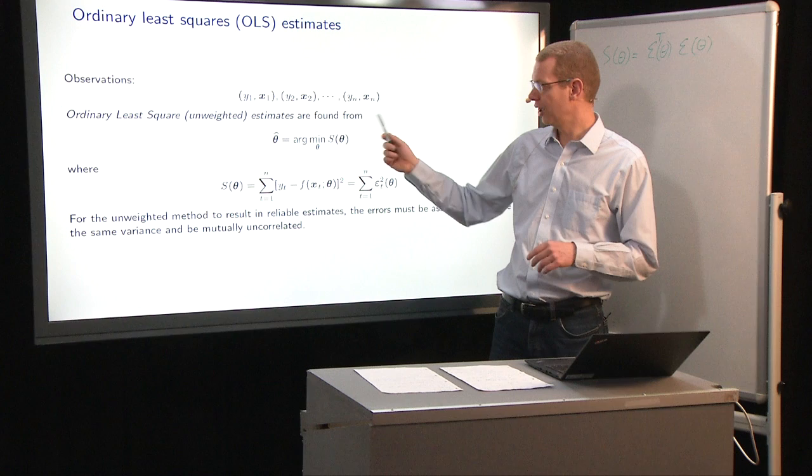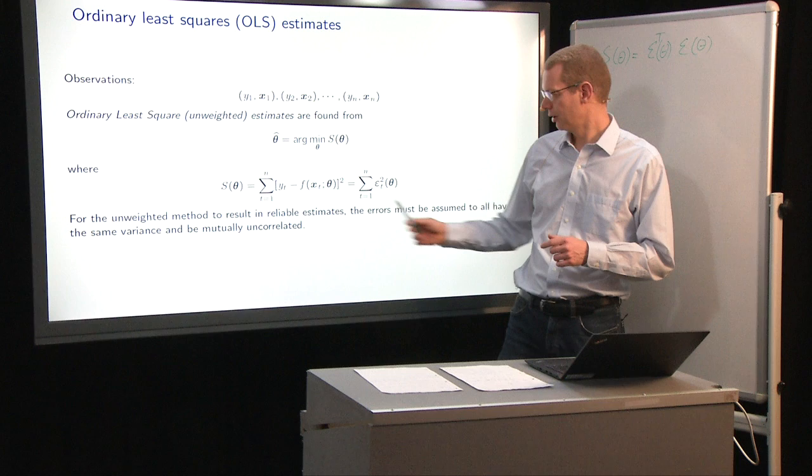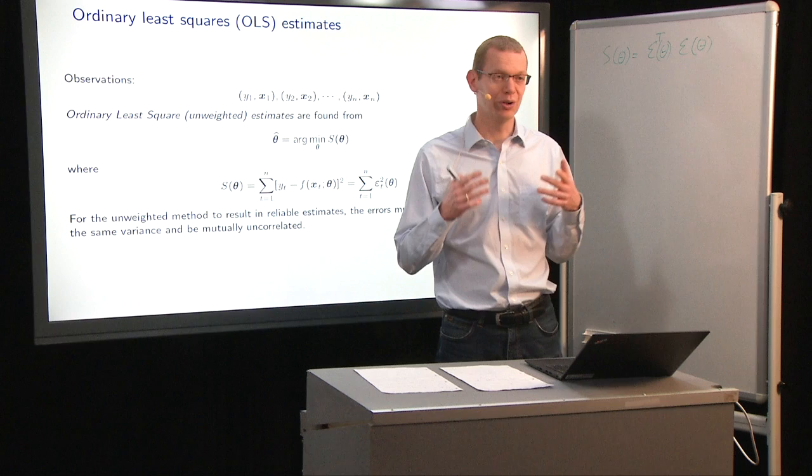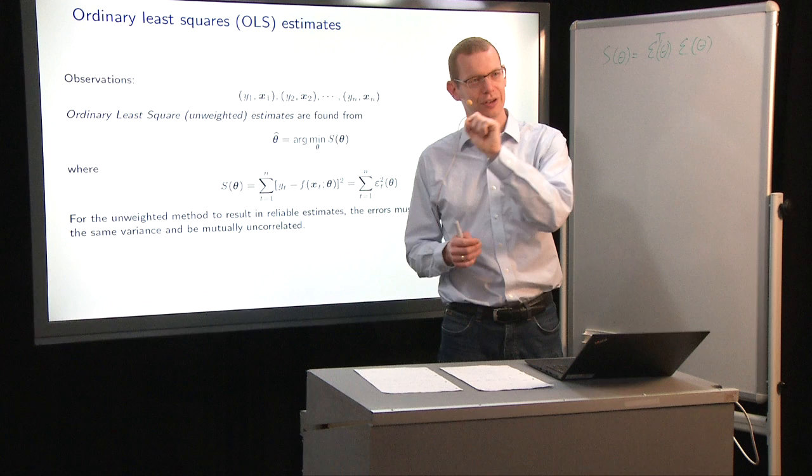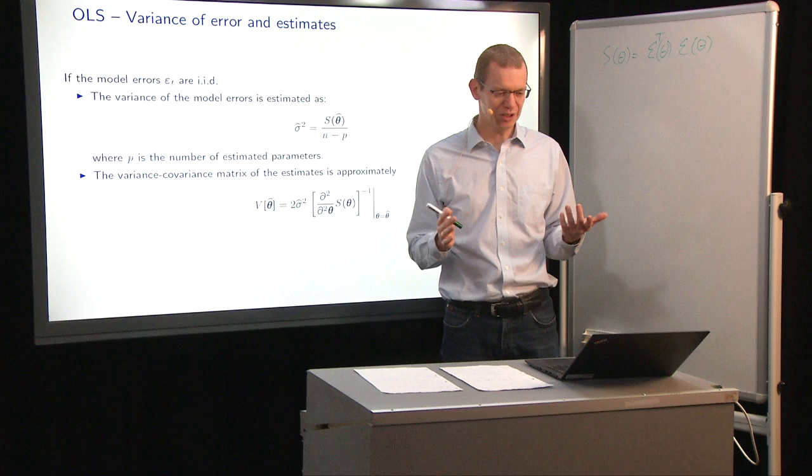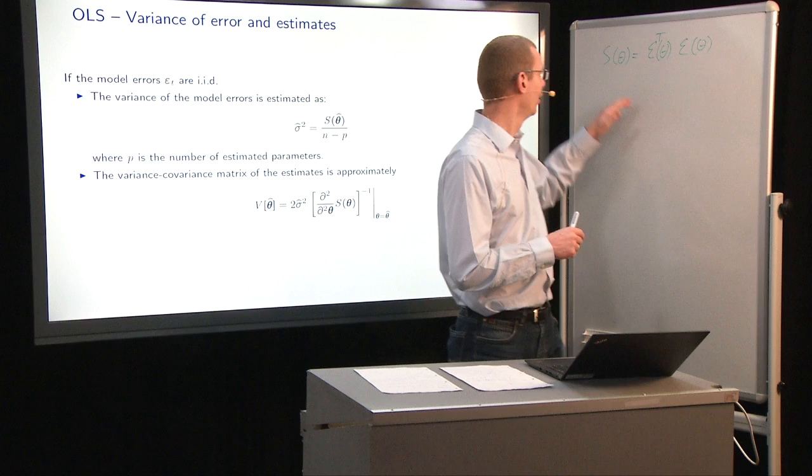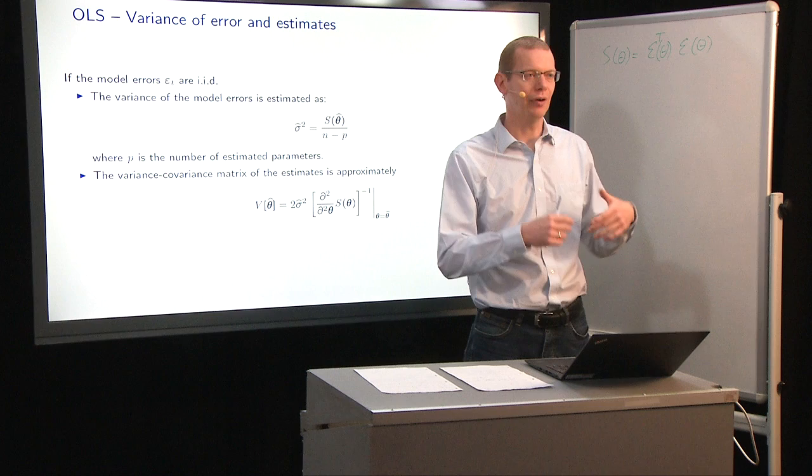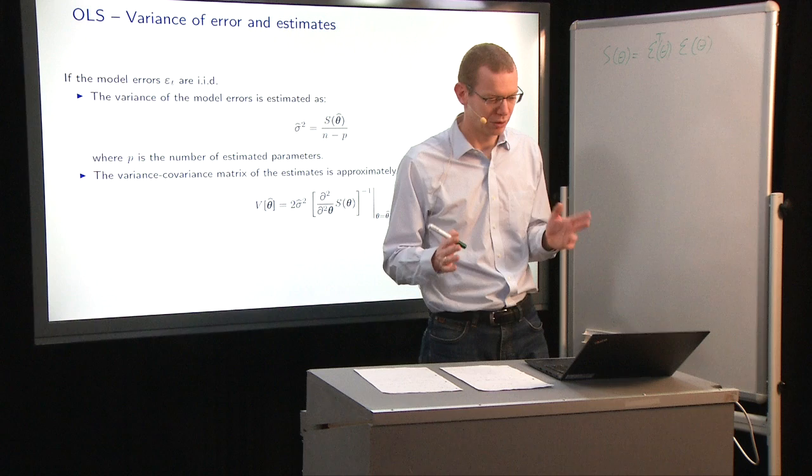When things are unweighted, as we have in this case, then in order to get reliable results, the errors are assumed to be with the same variance and independent, as in mutually uncorrelated. What we will refer to as IID, independent, identically distributed. In this model, an estimator of the variance is to take the sum of squared errors and divide that by the number of degrees of freedom for the residuals, which will be the number of observations minus the number of parameters.